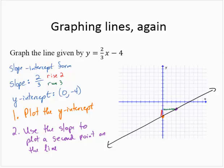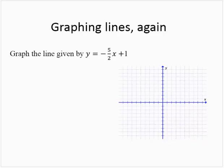Let's see another example. Graph the line given by y equals negative five-halves x plus 1. Again, I recognize this as being in slope-intercept form,